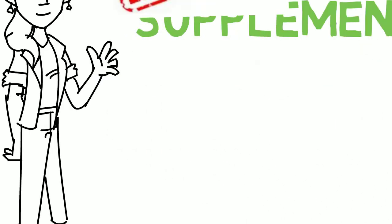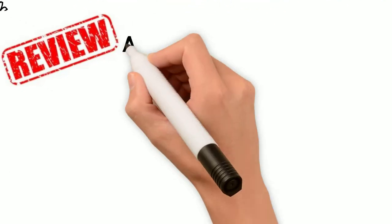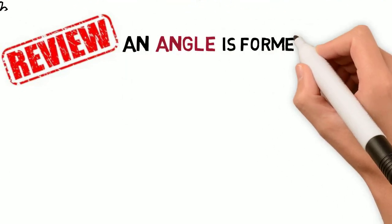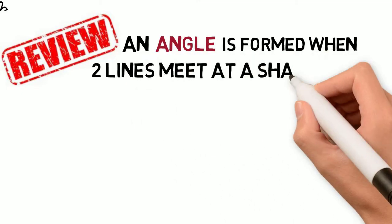Before we dive in, let's review everything we know about an angle. So an angle is formed when two lines meet at a shared point, like this.